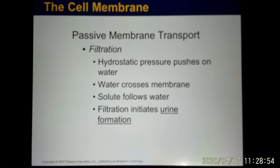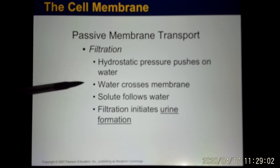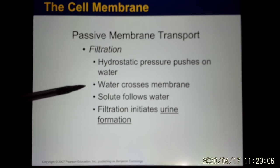The second passive transport mechanism is filtration. In filtration, hydrostatic pressure pushes water through a slit. This is what happens in your kidney — when you form urine, your blood is filtered. Urine directly comes from your blood, and that process is filtration.